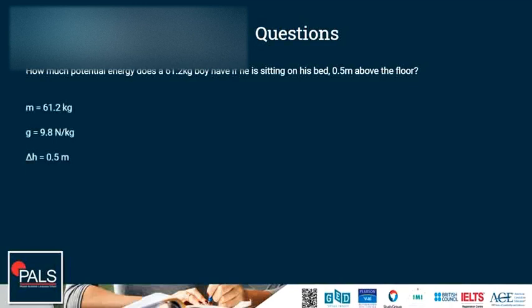These are the quantities that we know. We know the mass. We know the gravitational field strength of earth, which is a constant value, it's always 9.8 newton per kilogram. And we know the relative height. The boy is at 0.5 meters relative to the floor.